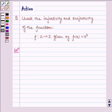Hello and welcome to the session. Let us understand the following problem today. Check the injectivity and surjectivity of the function. We have a given function f from Z to Z given by f(x) is equal to x³.